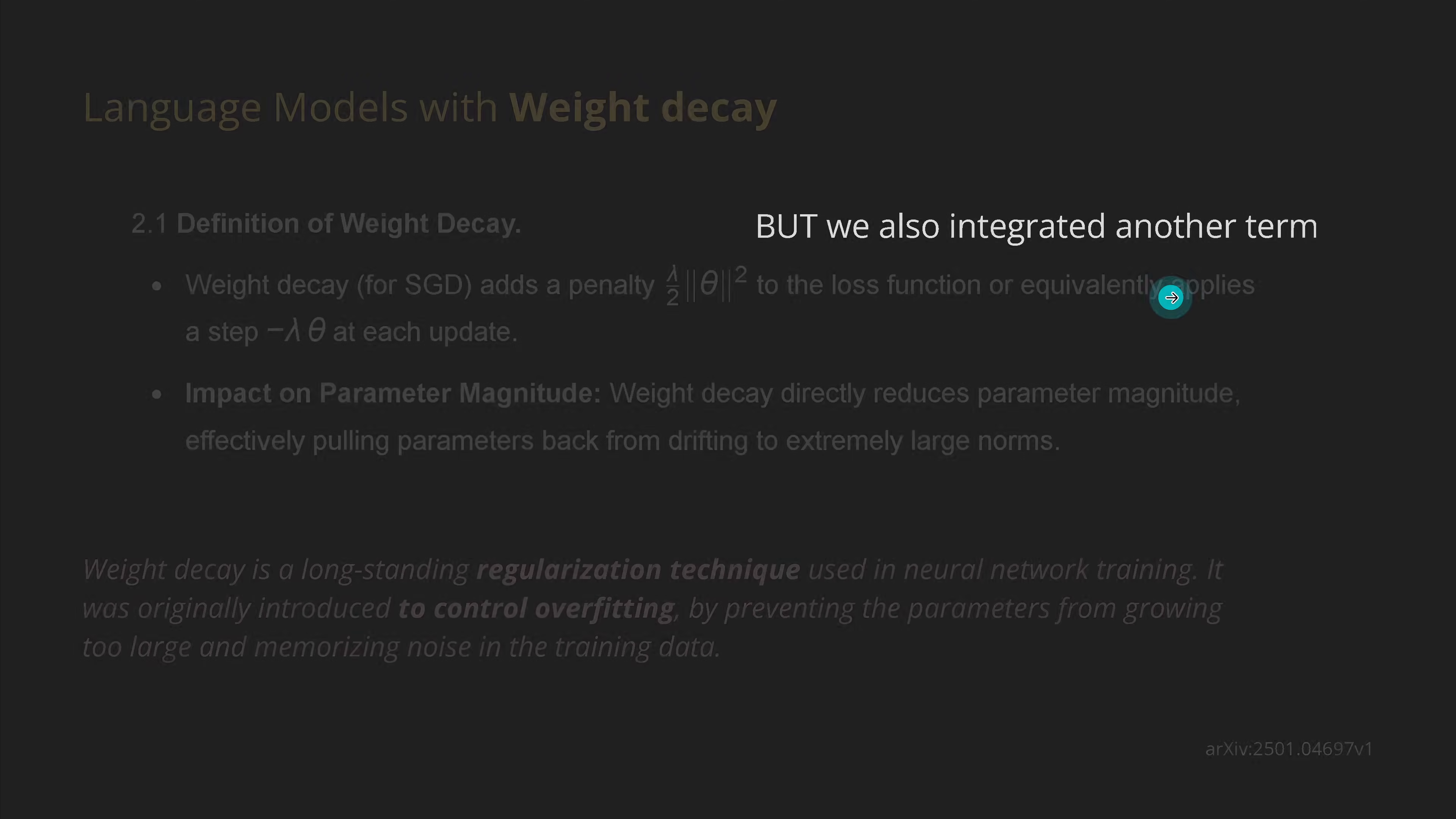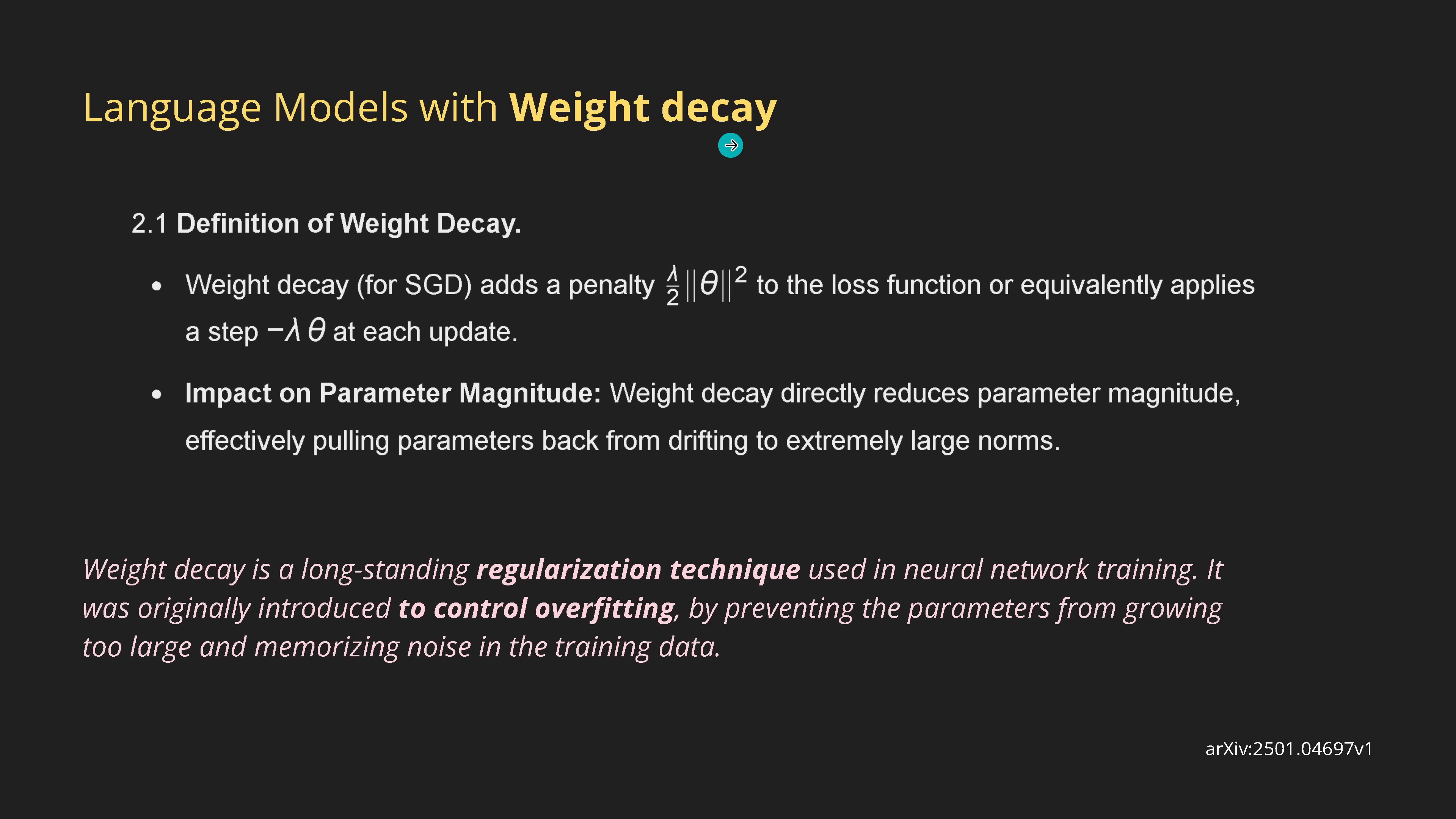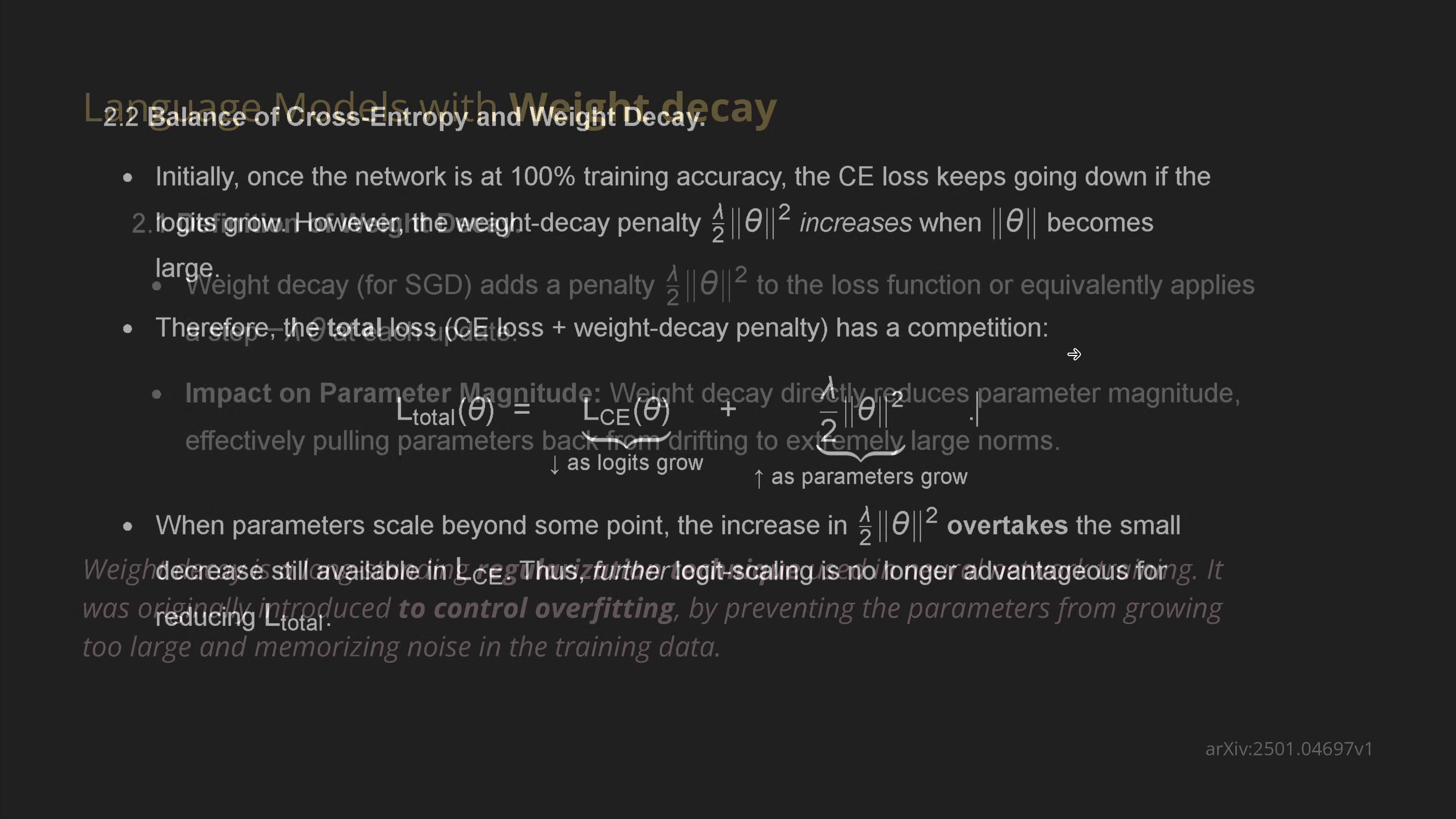And now to the solution. You know what? We integrated in the training procedure of our LLM another term. Do you remember the term of the weight decay? Some people use it, some people don't. I do use it. And originally, the weight decay was here a regularization technique that we used in the neural network training for controlling the overfitting. This is a paradox, no? Now this has another effect. So by preventing the parameters from growing too large and the memorization noise in the training data, if we have this weight decay part here, this penalty that we introduce here to the loss function, this is now absolutely essential to understand.